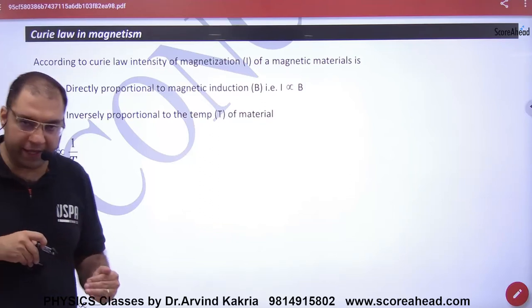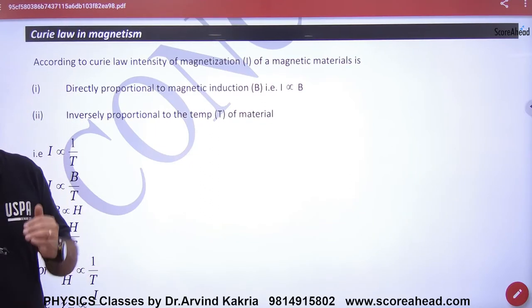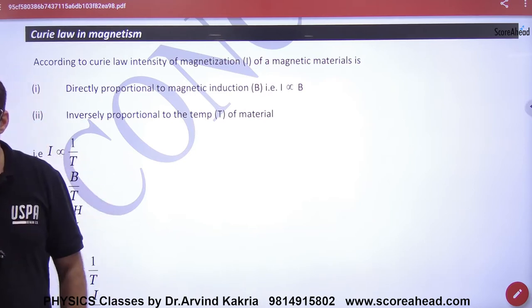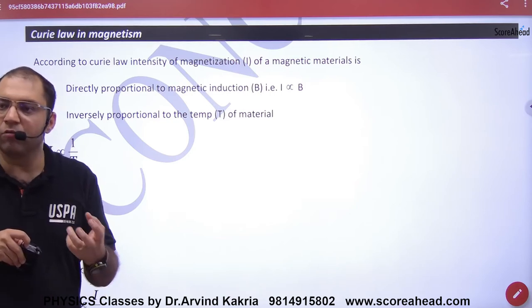Curie's Law in Magnetism tells you that if you have any substance and you think that the substance was magnetized, it tells its value.